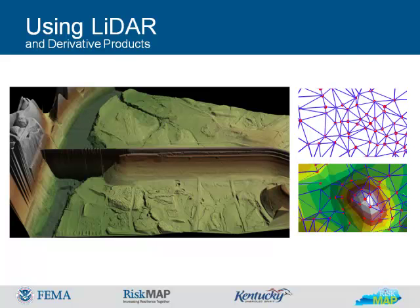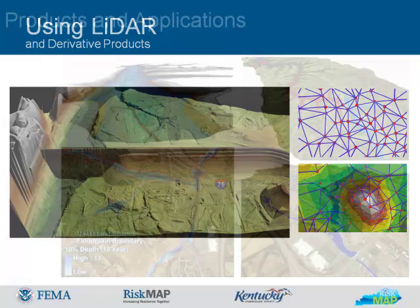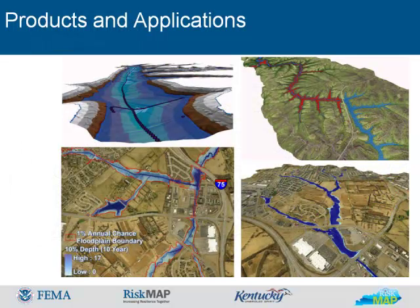This is a TIN of Wolf Creek Dam. This slide illustrates some of the products and applications for LIDAR. LIDAR is used for RISMAP products to develop depth grids and the probability of flooding during a 30-year mortgage. These images illustrate LIDAR combined with imagery for inundation zones and LIDAR combined with sonar points for dam volume capacity.